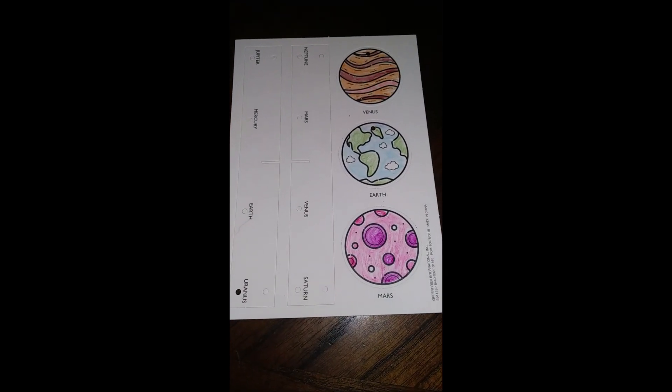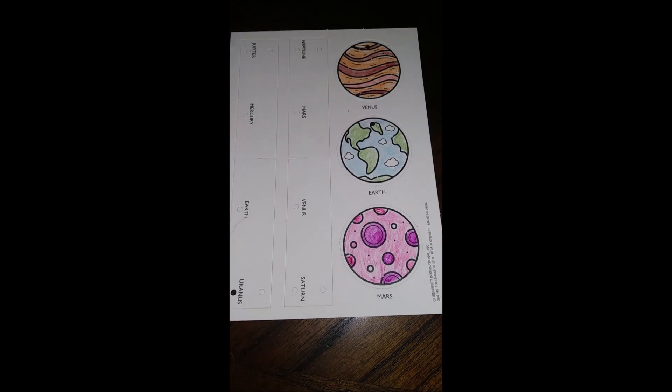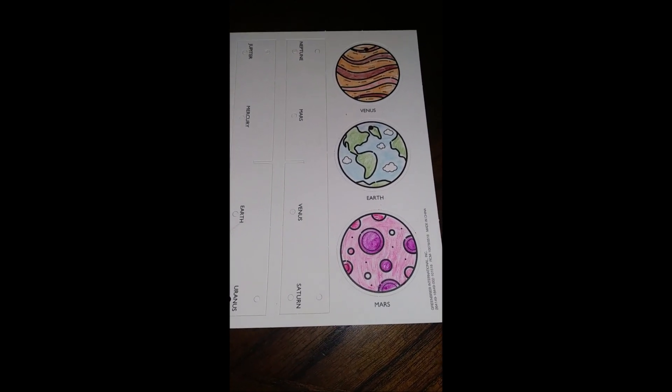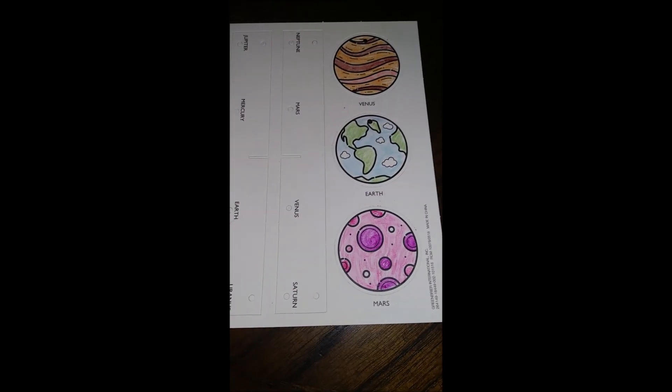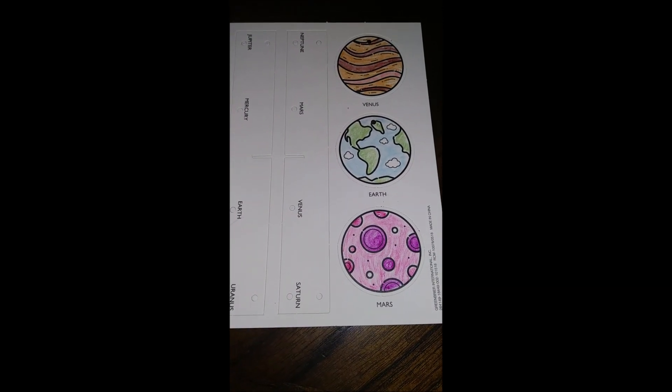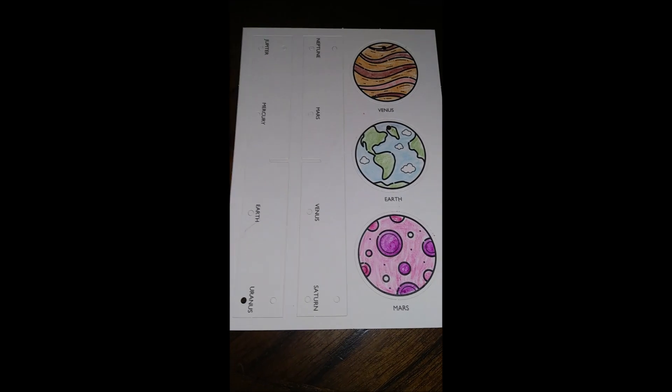Last but not least, we have Venus, Earth, and Mars. And I chose some brown for Venus, of course green and blue for Earth, and red and some purple for Mars. Now, we have to punch these out and tie them up with the string that came in.